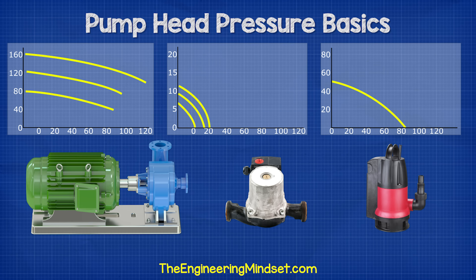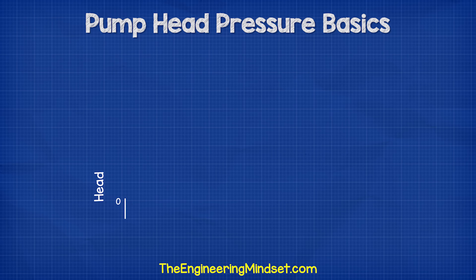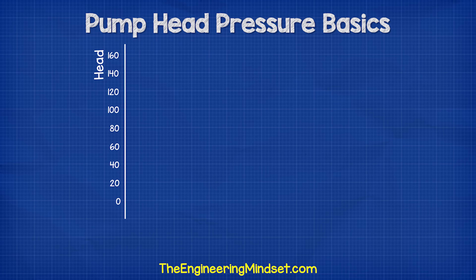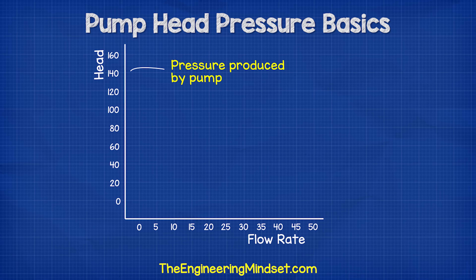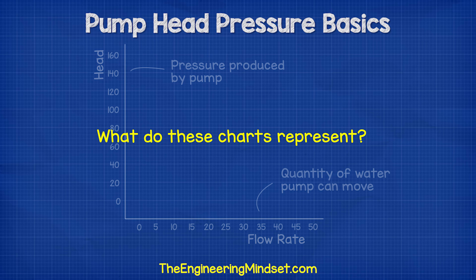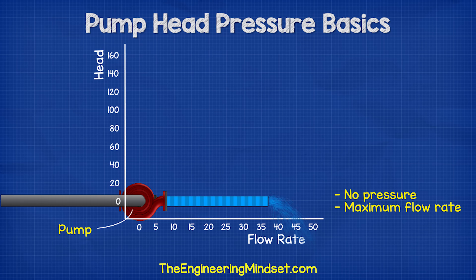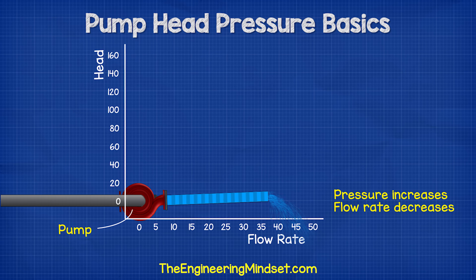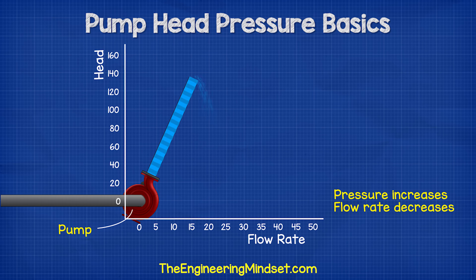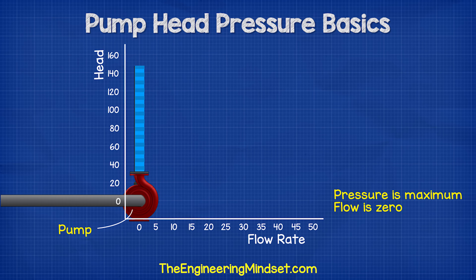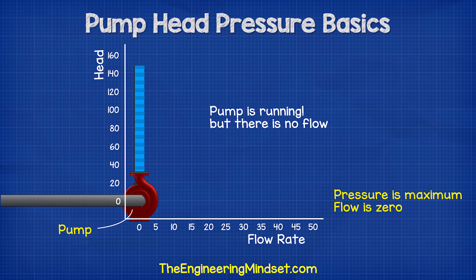Each type of pump has a different chart and the data plotted on them also varies with the model. The first thing we notice is that on the main vertical y-axis we have the head pressure, and on the horizontal x-axis we have the flow rate. The head is pressure and the flow rate is how much water the pump can move. If we turn the pump sideways and connect it to a pipe, the pump is pushing the liquid horizontally so there is no pressure, but the water is flowing at its maximum flow rate. As we slowly rotate the pump towards the vertical position, we see the flow rate decreases but the pressure increases, because it's now pushing against the water and the friction. As we get all the way to the vertical position, there is zero water flowing out of the pump but maximum pressure, as it's using all its energy to push against the water and hold it as high as it possibly can within the pipe.